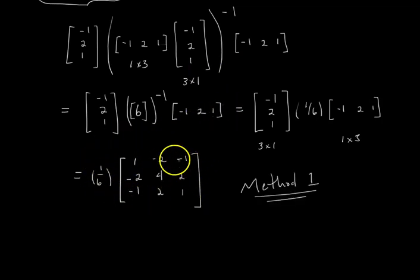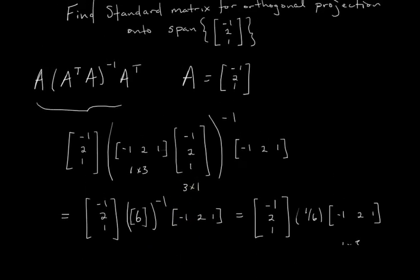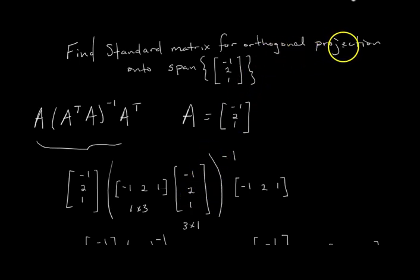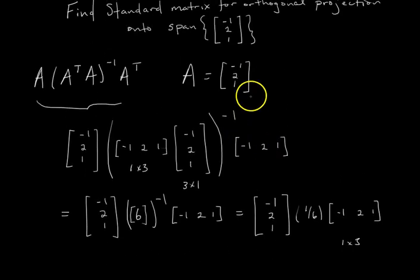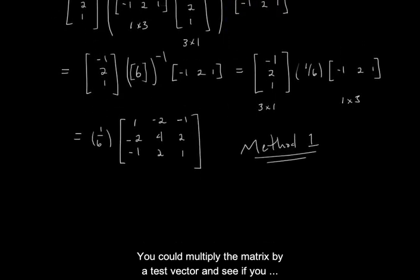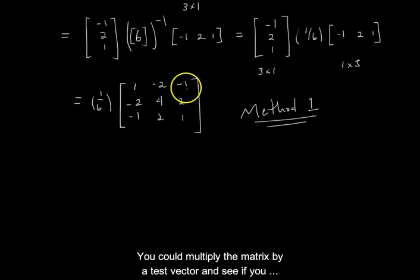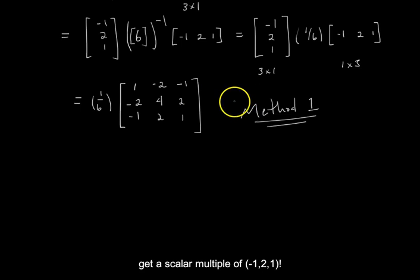So after simplifying, you get this matrix here. You can distribute the one sixth in, or you don't have to. But this matrix is our standard matrix for the linear transformation that projects input vectors onto the line spanned by this vector. You could test it, although I don't know how you could really verify that. But okay, this is the answer. Just trust the process. But this is the answer by doing method number one, which is using this big formula here.